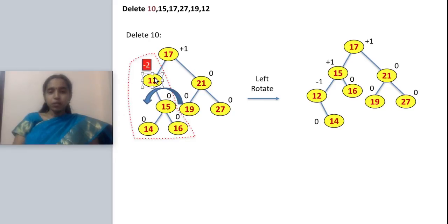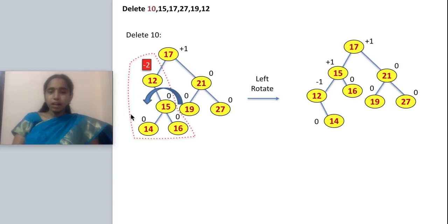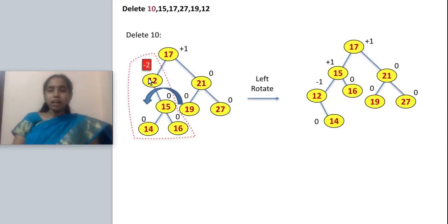Only 0, plus 1, and minus 1 are acceptable balance factors. I am getting minus 2, so I have to perform rotation. This is the P node and this is P1. Analyzing the case, this side is balanced, so it is a right-right condition. For a right-right case, you perform a left rotation.